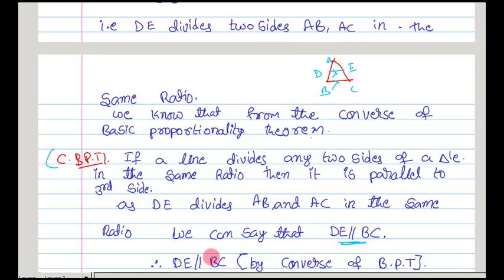Therefore, from the converse of basic proportionality theorem, we can say that DE is parallel to BC by the converse of basic proportionality theorem. Thank you friends for watching this video.